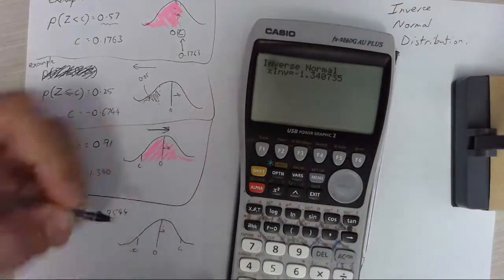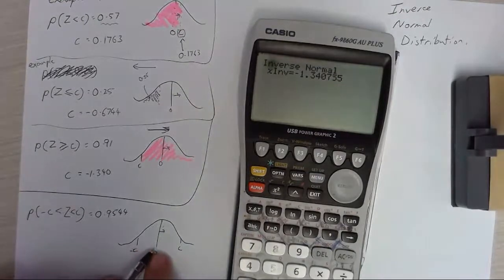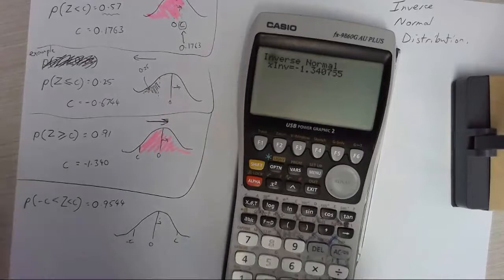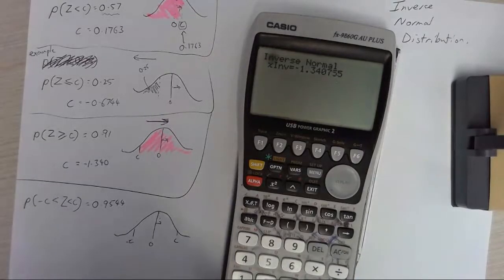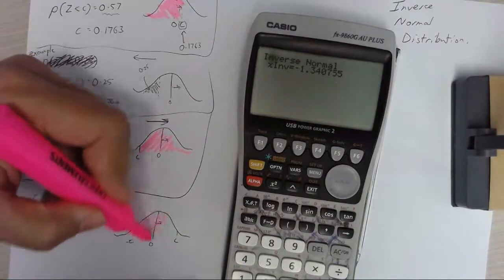There's c. Now the distance between negative c and 0 is the same as 0 and c obviously. C is the same number. And which I'm going to find this area here.